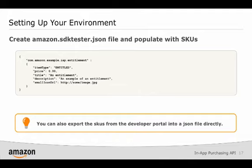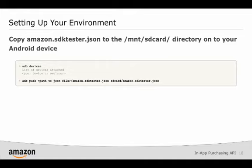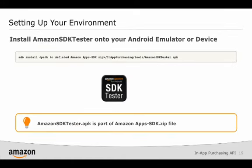In order to test your app with SDK Tester, you will need a JSON file containing your IAP items. You can create this file yourself, or you can go to the dev portal and use the JSON data file link on the in-app purchasing page to download a JSON file for all of your submitted SKUs. This is the preferred way, as it can be easy to make mistakes creating the JSON file yourself. Copy the amazon.sdktester.json file to the SD card directory on your device or emulator. Then install the Android app Amazon SDK Tester to the device you're testing on. The Amazon SDK Tester APK can be found in the in-app purchasing tools folder of the expanded Amazon apps SDK zip file you downloaded earlier.